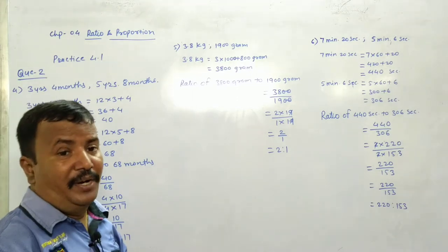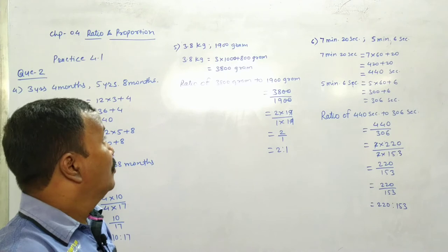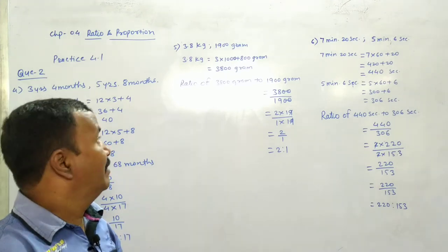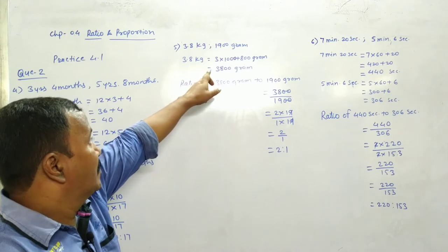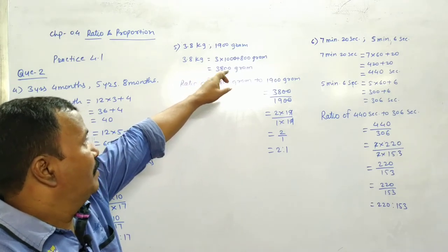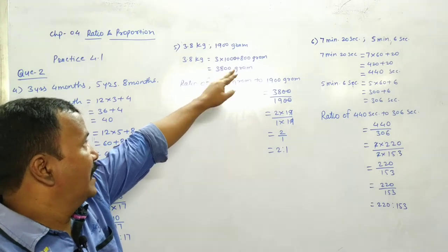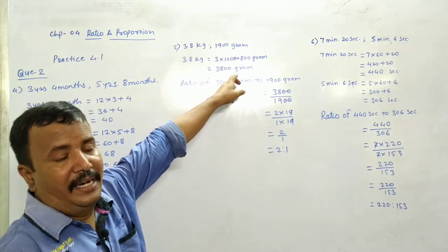Okay? Next, 3.8 kg and 1900 gram. So kg to gram convert karo. 3.8 kg equal to 3 into 1000 plus 800 gram. 3 into 1000, 3000 plus 800, 3800 gram.